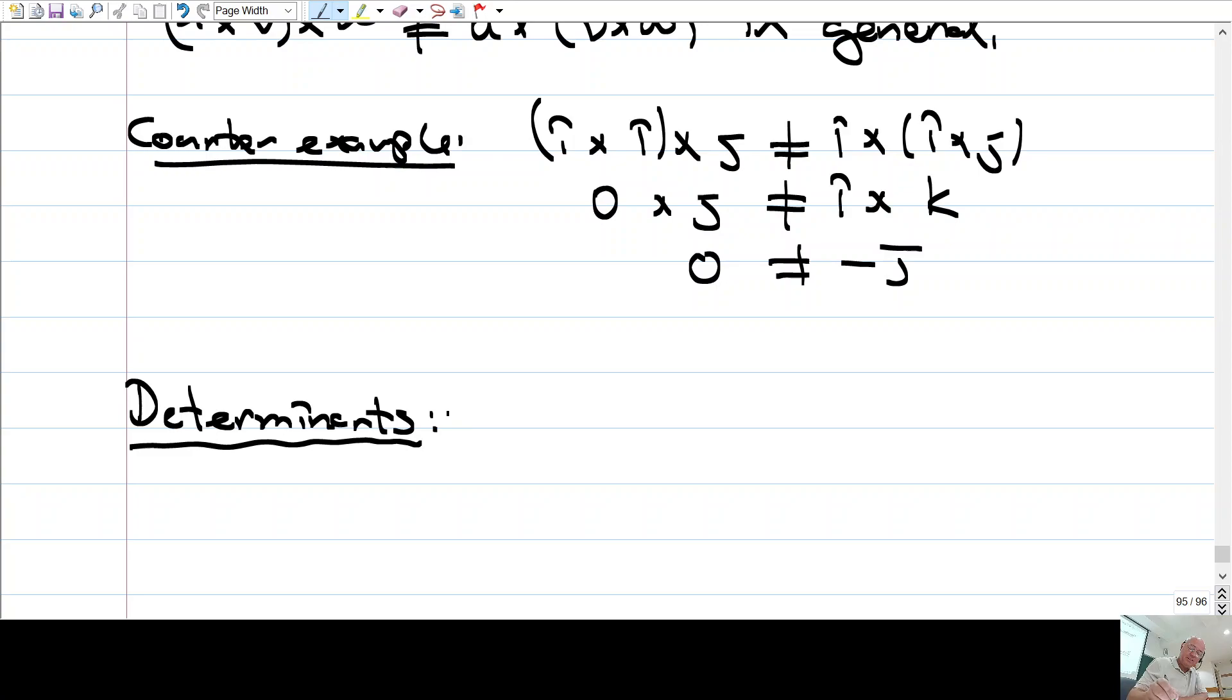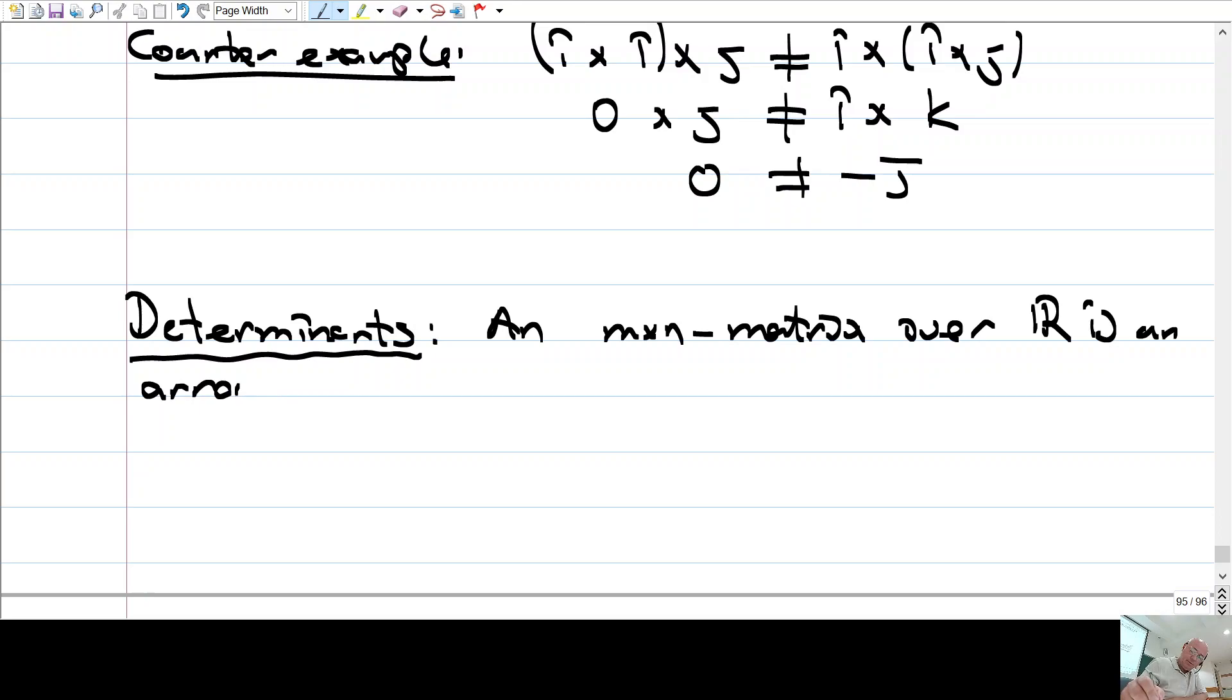Neyse, siz biliyorsunuz matrisler şunlar değil mi? Okay, n by n matrix over R is an array of real numbers of the form.